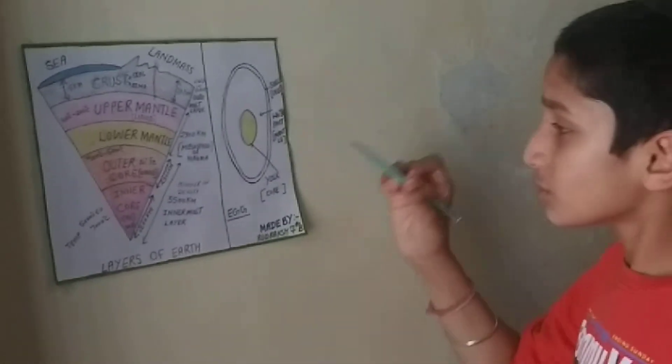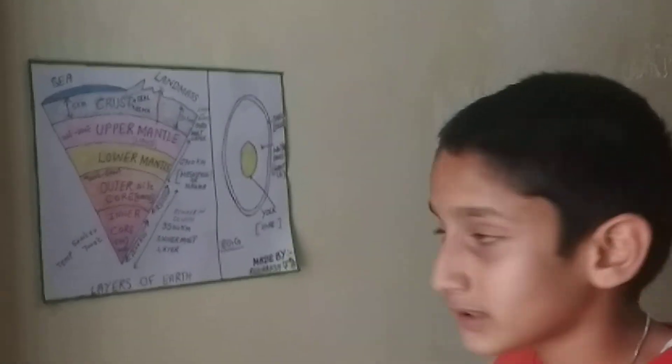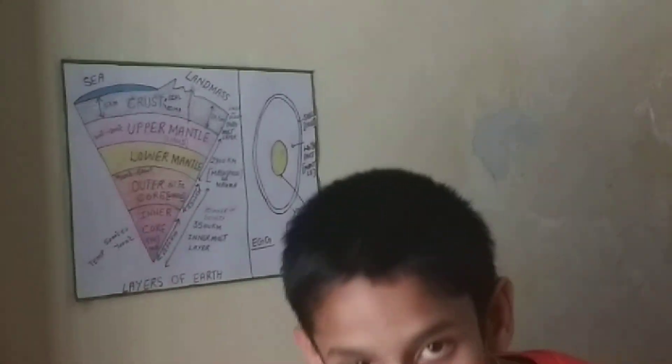The core resembles the yellow part of the yolk of the egg. This is all about the layers of the earth. Thank you and have a nice day.